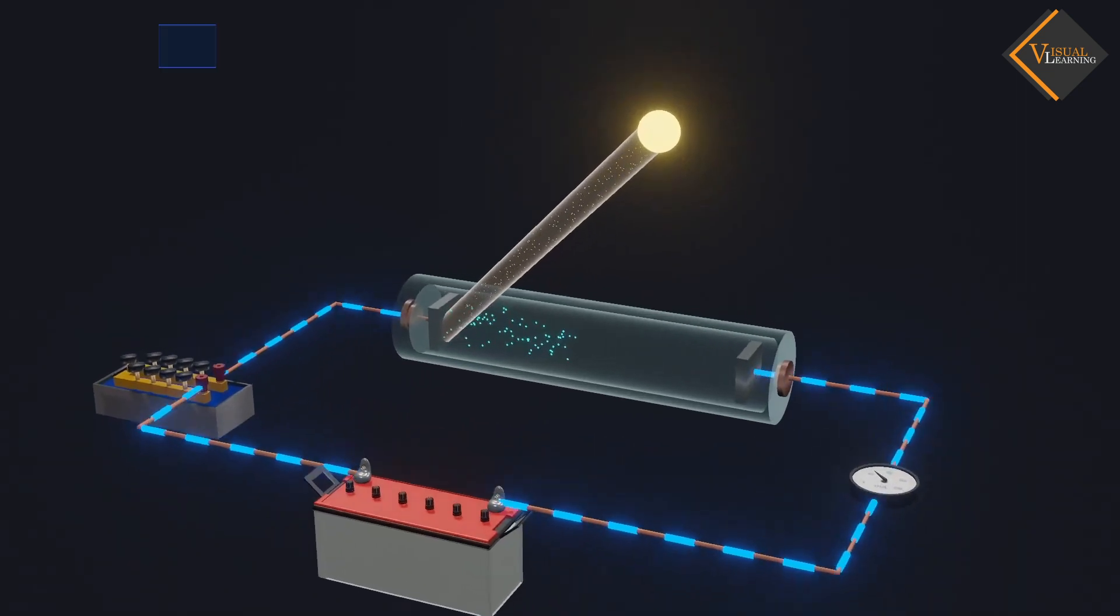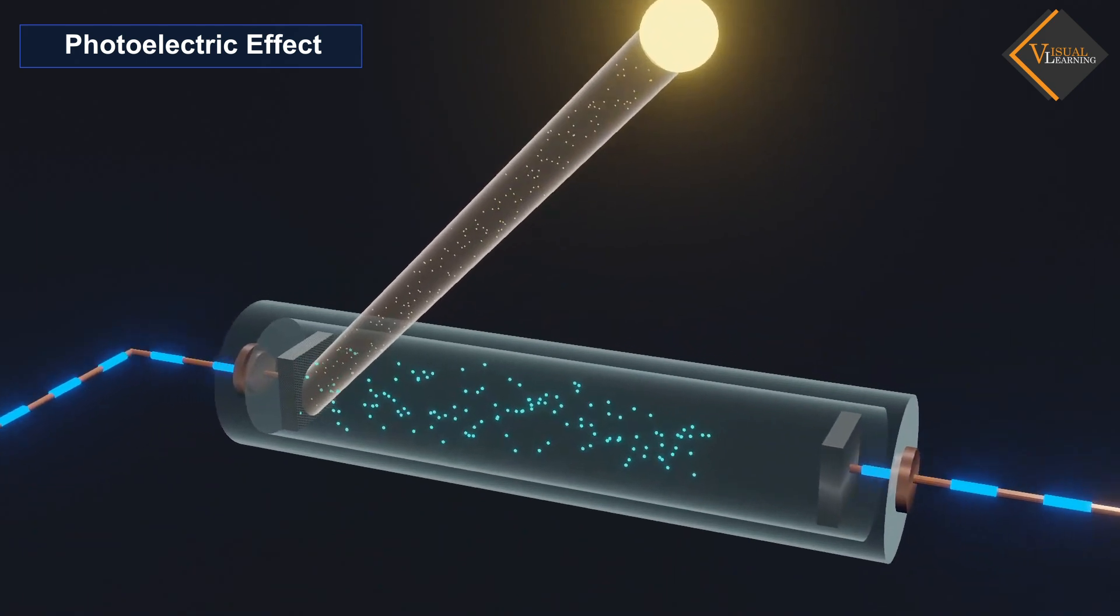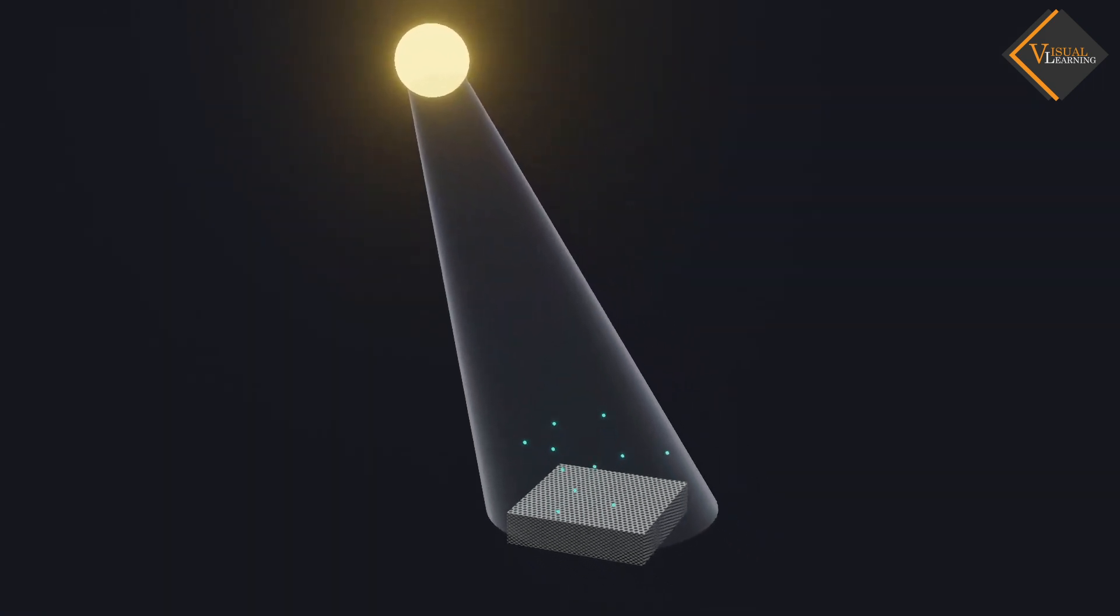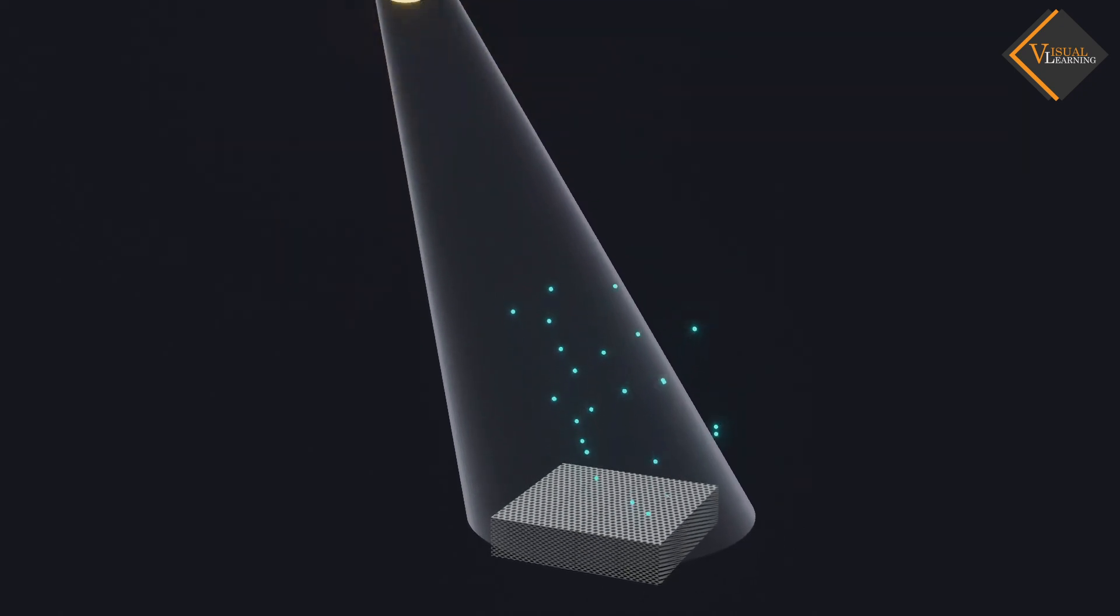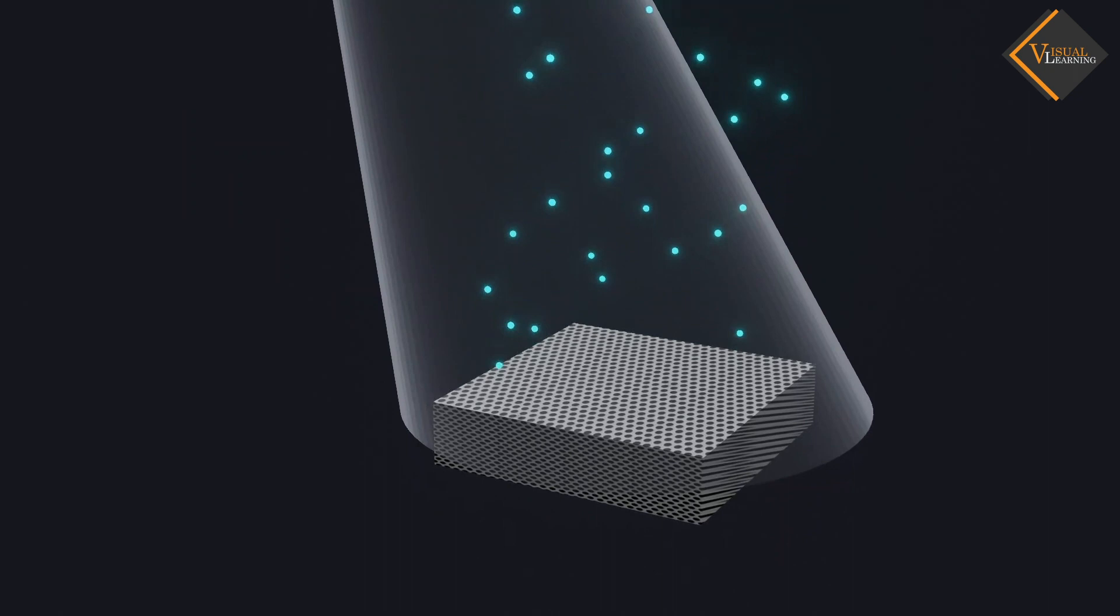In this video, we will understand photoelectric effect. The photoelectric effect is a phenomenon in which light radiation falls on a metal surface causing the emission of electrons from that metal surface.